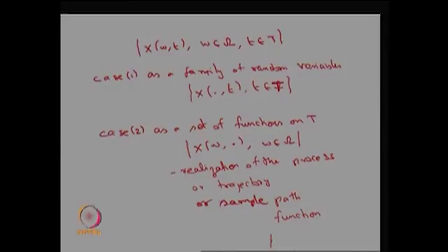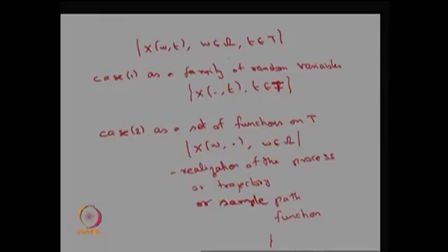These are the different names for Case 2. Once you know one possible outcome, you are tracing the stochastic process along that one possible outcome — therefore it is called the realization of the process, or trajectory, or sample path. In conclusion, you can always define a stochastic process as a collection of random variables for different values of t, or as a collection of functions on t for different possible outcomes w belonging to omega.